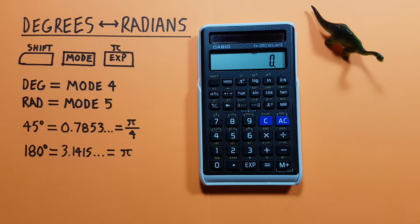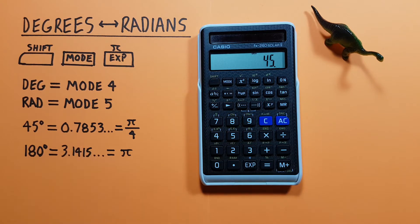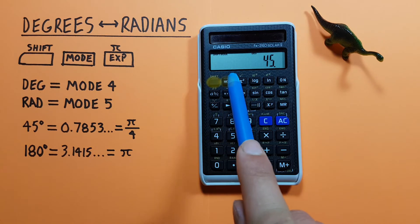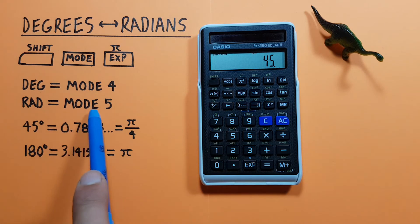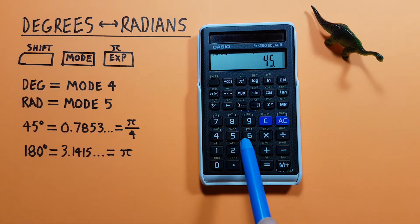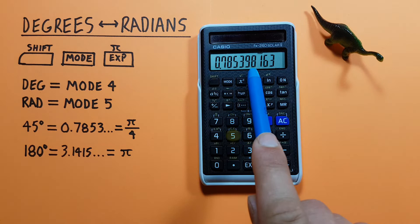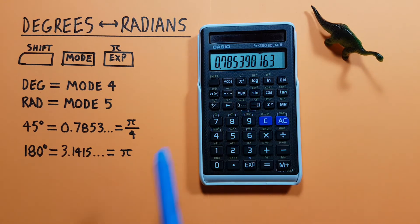Next we enter our degrees, so 45, and now we can convert to radians. To do that we press shift and then the mode key and then the mode we want, which was radians mode, so number 5. Our 45 degrees has converted to 0.7853 etc. radians.